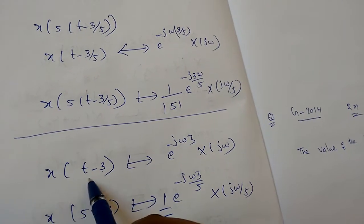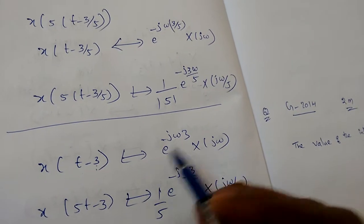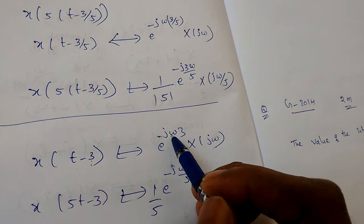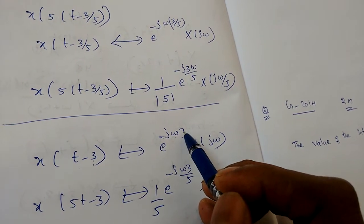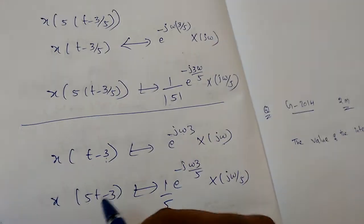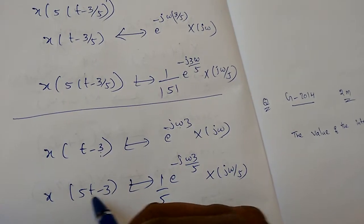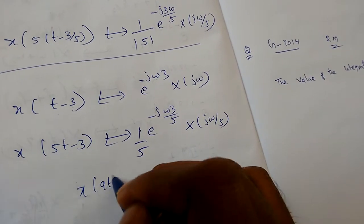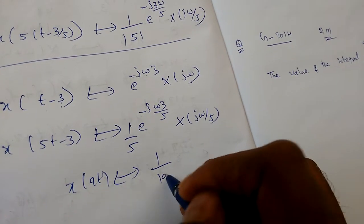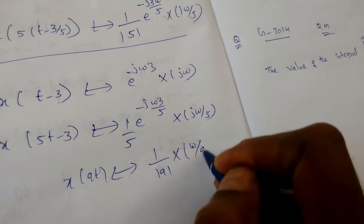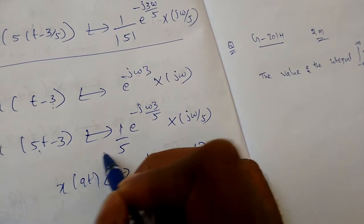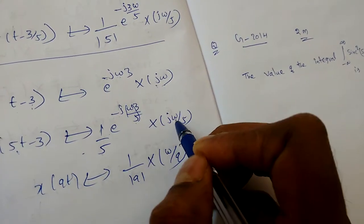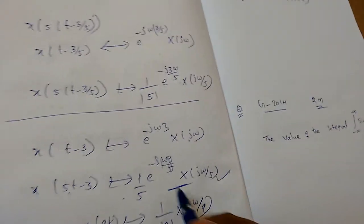First apply the shifting: x(t − 3) has Fourier transform X(jω) · e^(−jω·t₀), with t₀ = 3. Then apply scaling for x(5t − 3). We know x(at) has Fourier transform (1/|a|)·X(ω/a), so the result is (1/5) · e^(−jω·(3/5)) · X(jω/5).